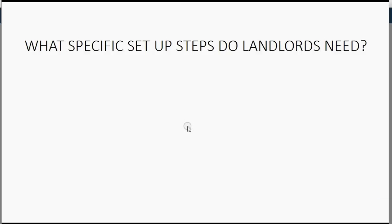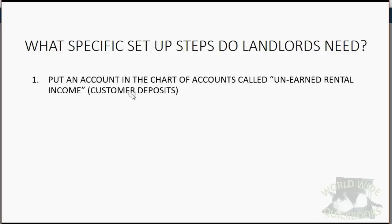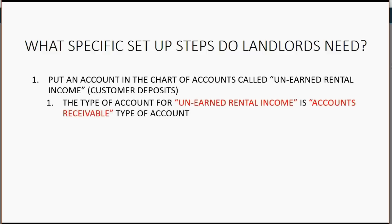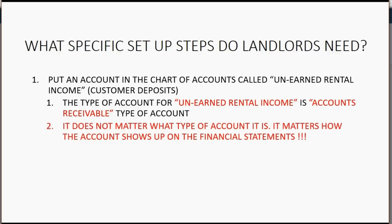Now let's discuss the specific things that landlords need that others do not. First, we have to put an account in the chart of accounts called unearned rental income. This is the account that will show the total accumulated deposits or rent payments in advance for future rent services that the landlord owes to the tenant. The type of account for unearned rental income is an accounts receivable type of account. It matters how the account shows up on the financial statements, and it matters that the account helps us keep track of the total money received from all tenants that we have not yet applied to their future rent.